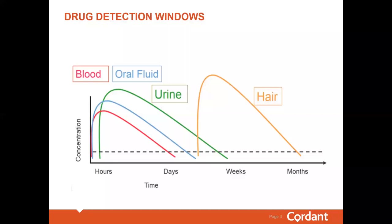Oral fluid mimics a pattern of blood, about one to three days for most drugs. This is a great matrix for identifying recent drug use. Next is urine, which has a window for most drugs of three to five days, with the exception of marijuana and certain benzodiazepines. Then finally, hair, which gives you a 90-day window in most cases and is a great way to understand an individual's lifestyle choices over a longer period of time.